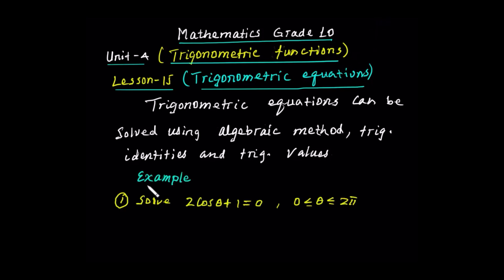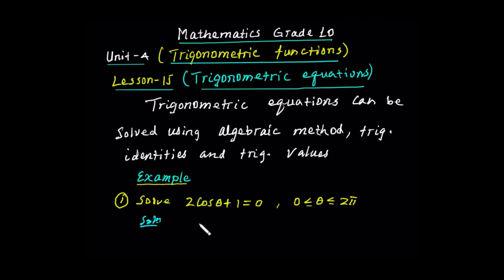Okay, we have an example here. Solve two times cosine of theta, the last one is equal to zero, where theta is between zero and two pi. Let's see the solution. Here is the equation: two times cos of theta plus one is equal to zero.